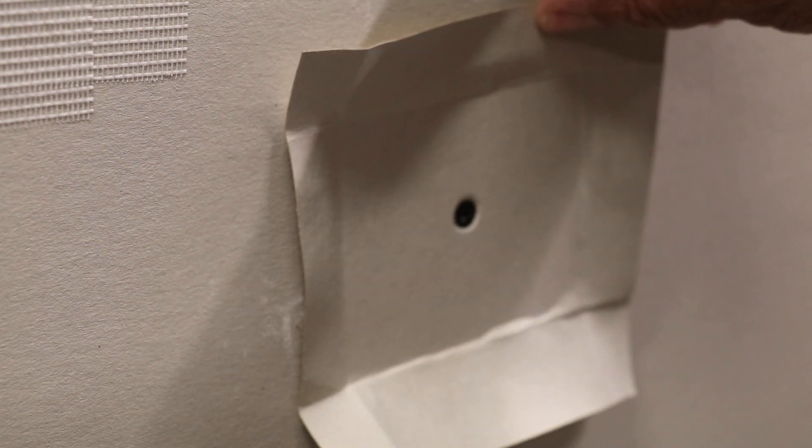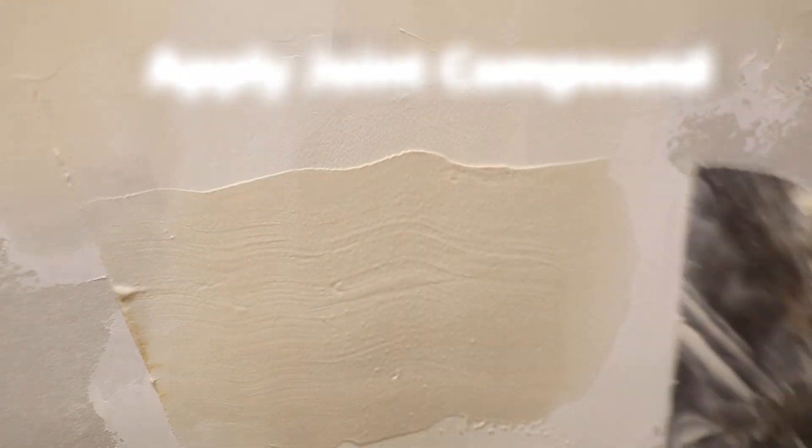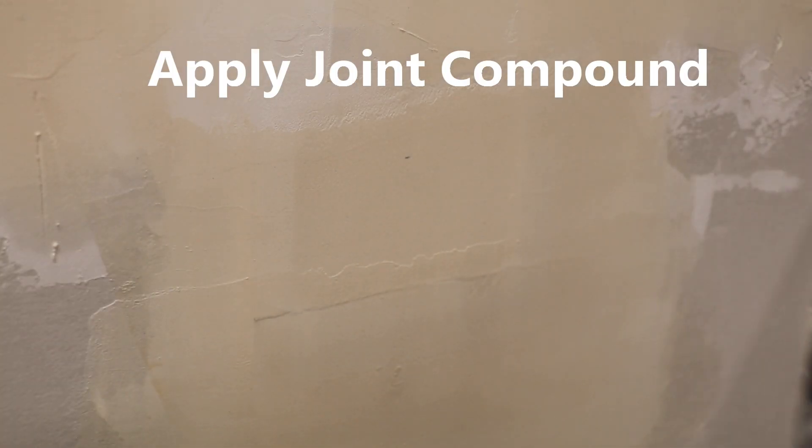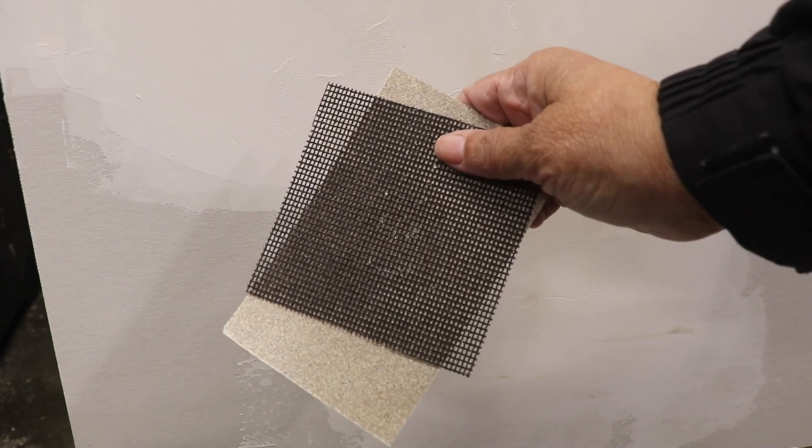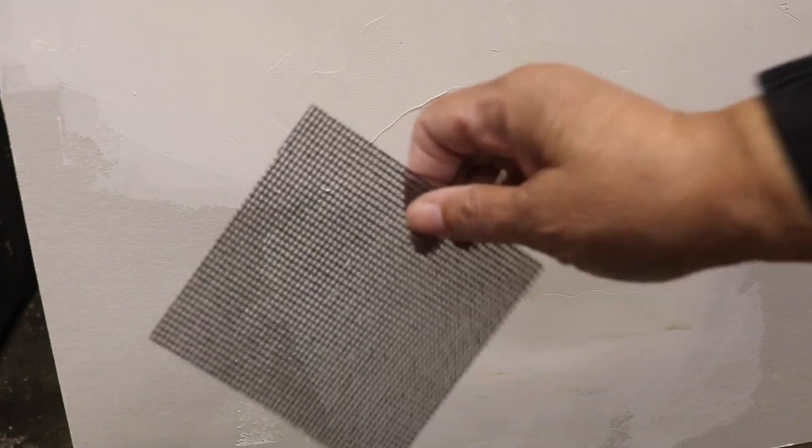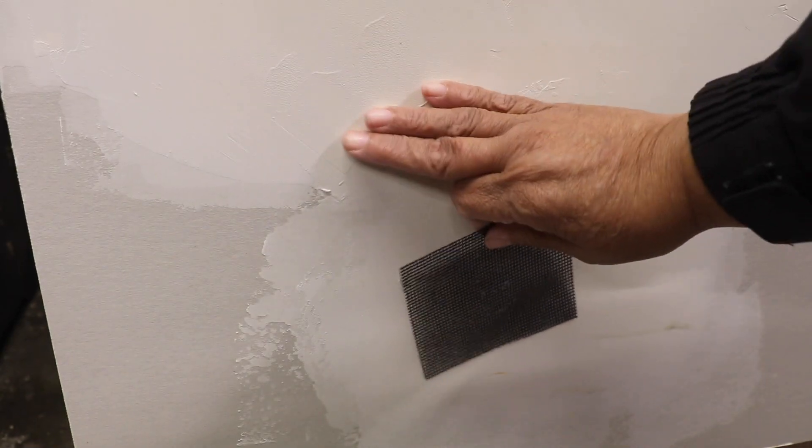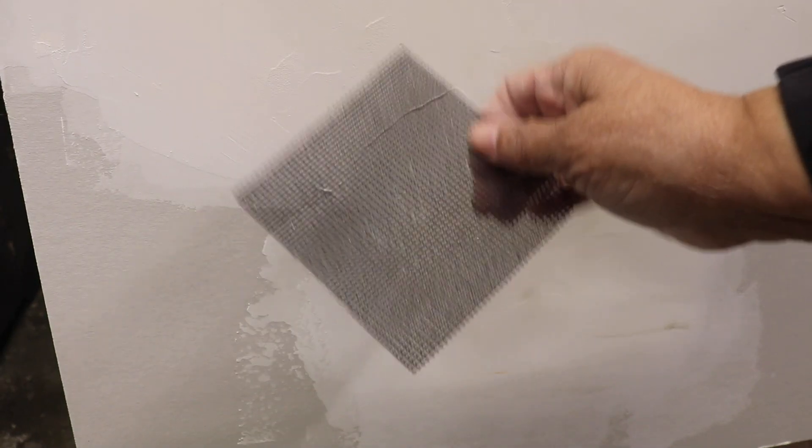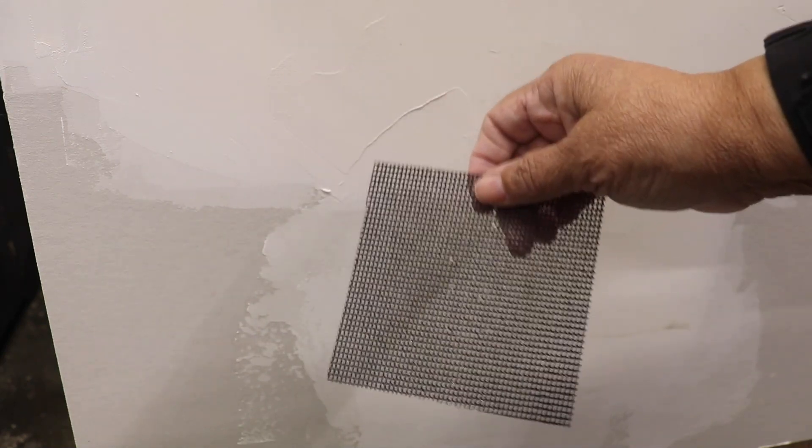Now once your joint compound has dried, all you need to do is a light sand. Now if you elect to use sanding screen like this here instead of sandpaper, just be aware that sanding screen has a tendency to leave scratches in the surface more than sandpaper would.